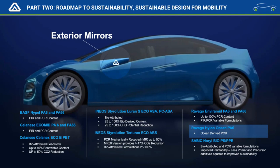For exterior mirrors, it's a choose-your-own-adventure scenario. If a consumer base is looking for ocean-derived waste content, we have a product through our Ravago parent company called Highline Ocean — sourced from fishing nets collected from commercial fishermen. We've worked with the community to collect these nets, break them down into a usable resource, and convert them into nylon 6 and nylon 6,6 feedstocks, then compound those into 10, 20, or 30% glass-filled nylon 6 for different exterior mirror applications.